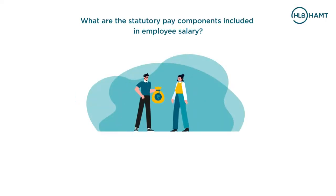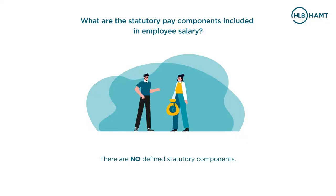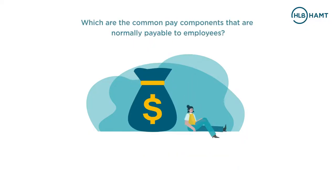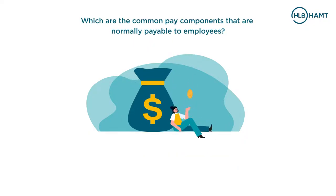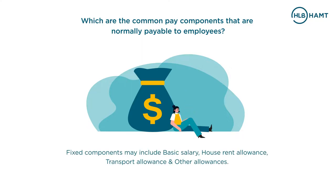What are the statutory pay components included in employee salary? There are no defined statutory components, but the common pay components normally payable to employees include fixed components such as basic salary, house rent allowance, transport allowance, and other allowances.